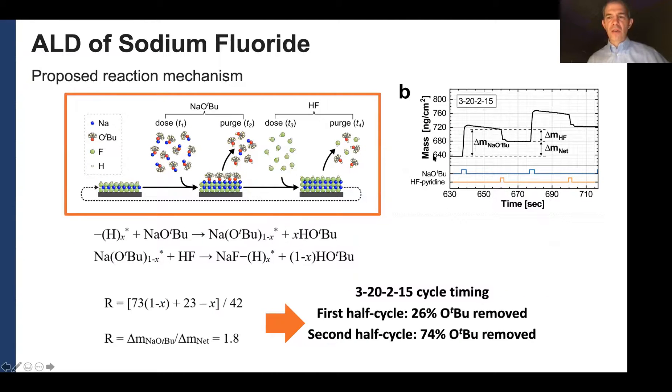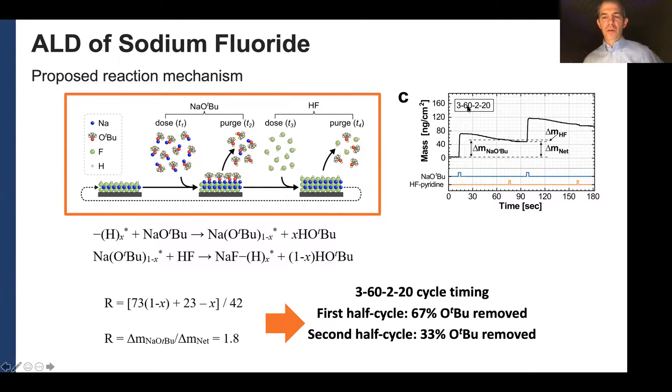So in the end, you know, we sort of settle on this intermediate purge time and then try to look at how many ligands are removed, you know, for the first and second half cycle for our film by solving the surface chemistry. So writing down our equations and then adding in solving for our mass changes. And so we, we can do that for both of these processes for the shorter 20 second purge and for the longer 60 second purge. The thicknesses were the same for each. Our growth per cycle was the same. So that was, that was pretty interesting.